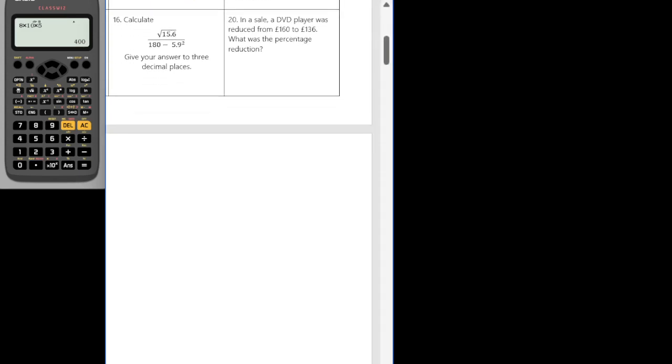And question 16. Calculate, given your answer to three decimal places. So I'm going to type this on my calculator. So fraction button, the square root of 15.6 divided by 180 minus 5.9 all squared. So given our answer to three decimal places, that's going to be 0.02.